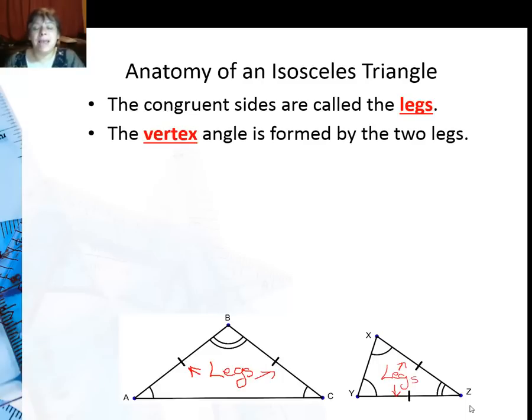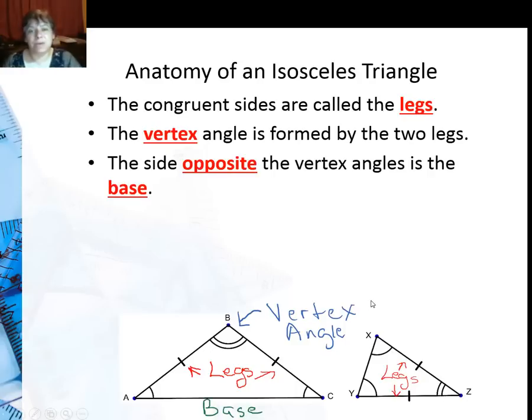The vertex is the angle formed by the two legs, so you can see here B is the vertex angle in this triangle and Z is the vertex angle on this other triangle. Just because it's lying on its side doesn't mean it's not the vertex.